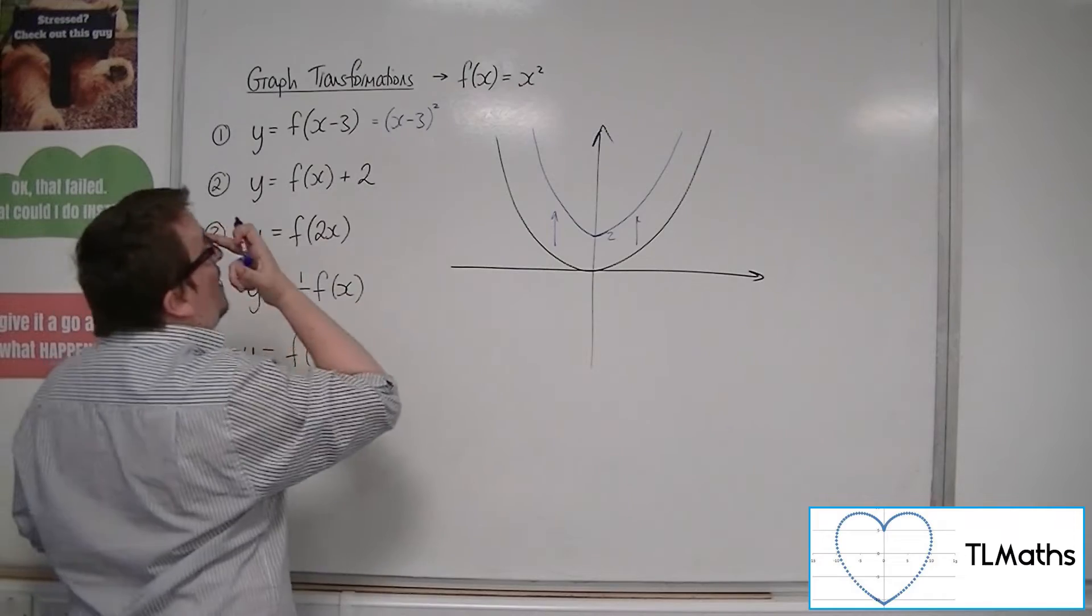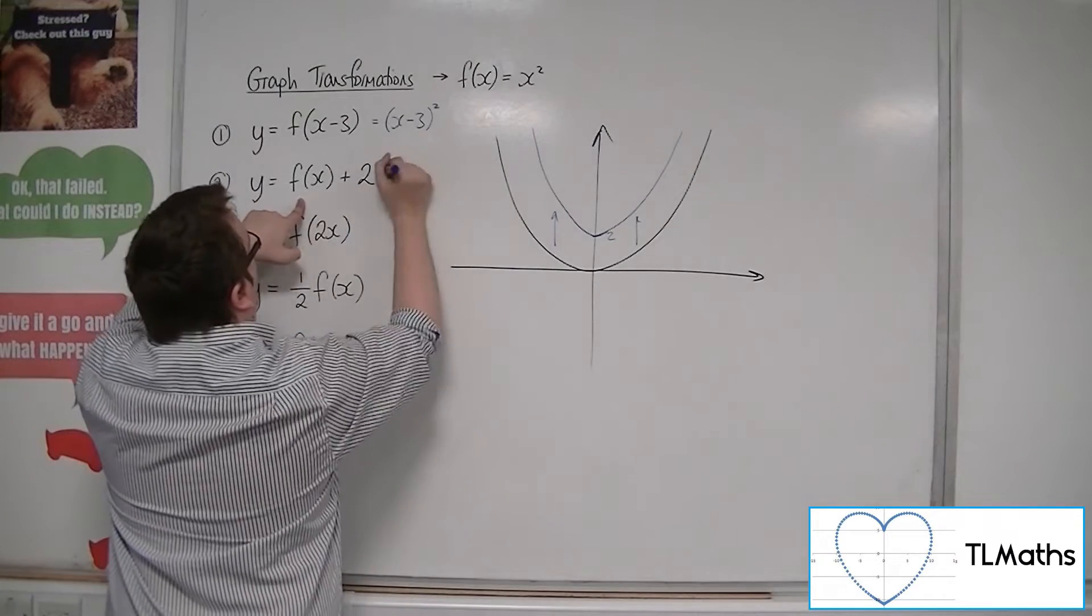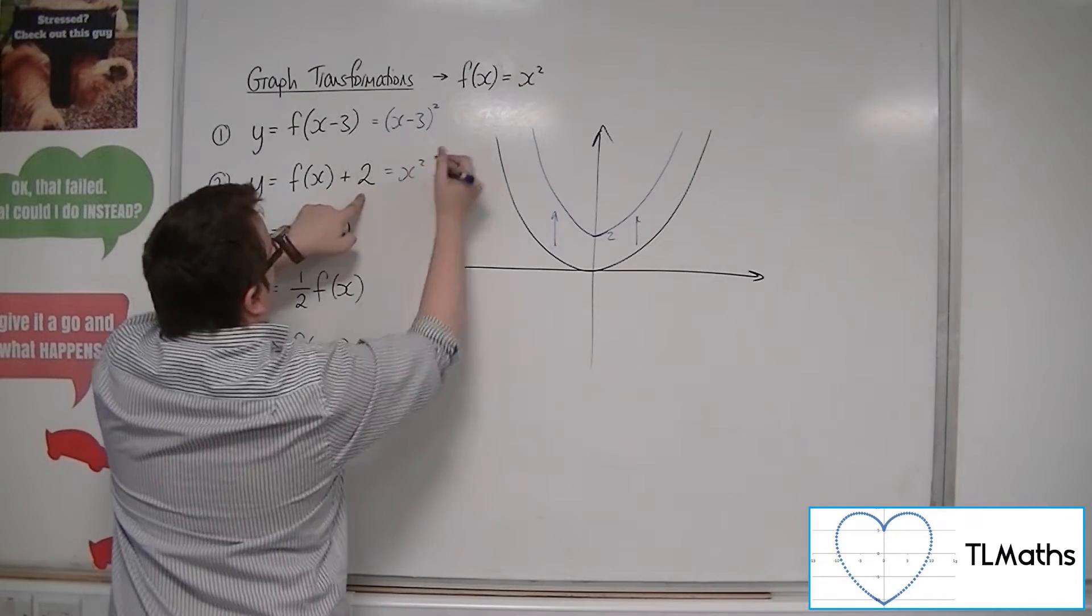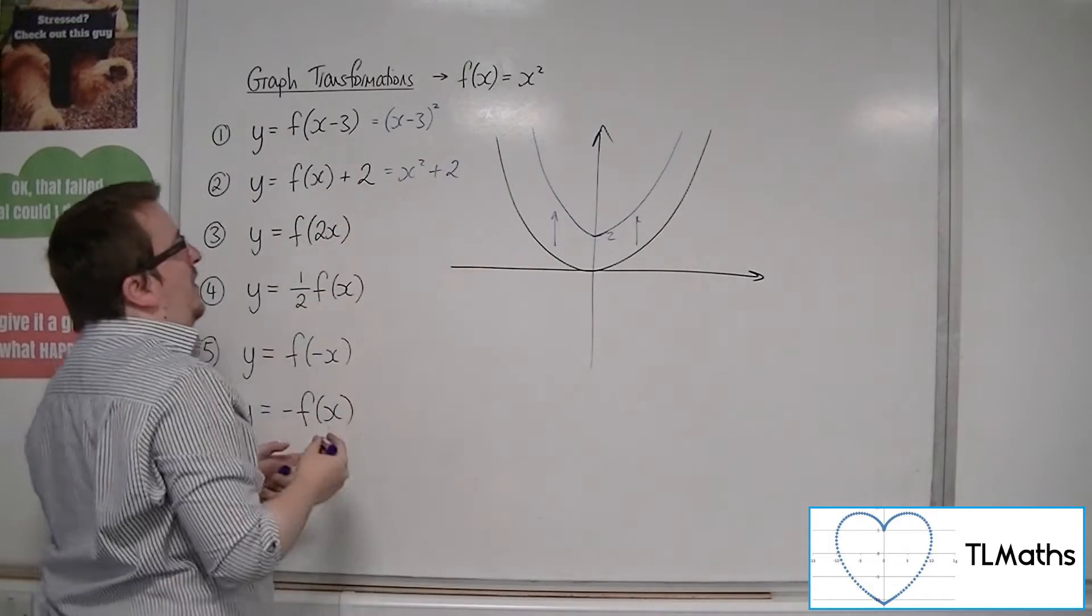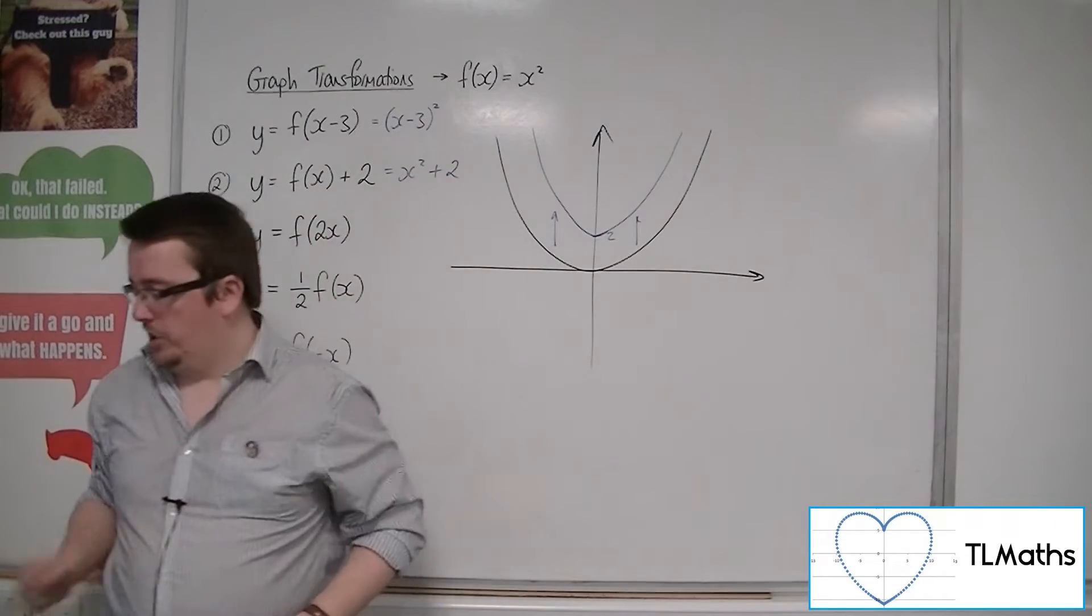So what would this equation be? Well, f of x is x squared plus 2. And so y equals x squared plus 2 would be the equation of this new curve.